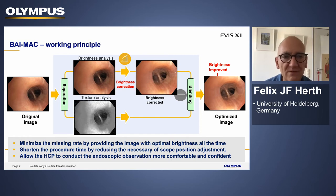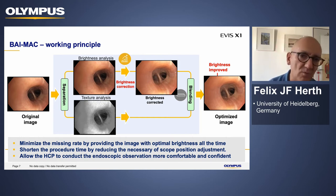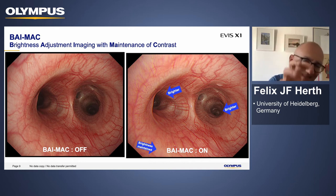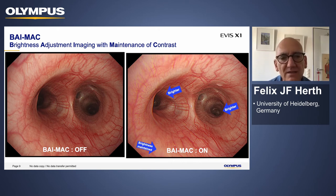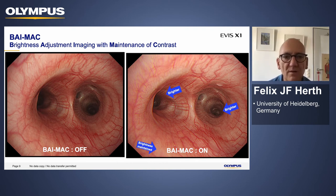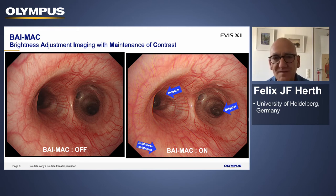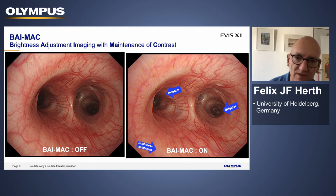We hope that BAI will reduce procedure time and give us better visualization of parts which are currently black. With the system off, you can see it's still dark in the depths. Pressing the button to activate the mode, it becomes way brighter in the depths — much better visualization of the deeper parts of the lung. We in Heidelberg are in the luxury situation of already having the system for testing, and you really see quickly deeper into the lung.